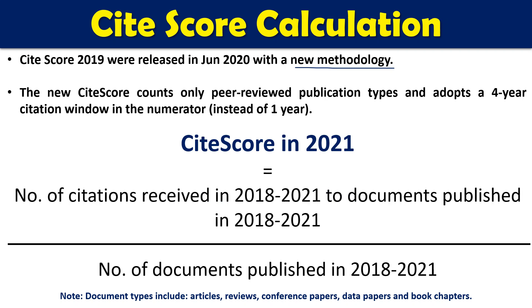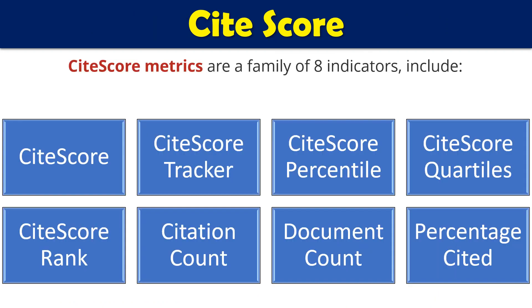The document types considered for CiteScore calculations are five different types: research articles, review articles, conference papers, data papers, and book chapters. CiteScore is also part of a family of indicators with eight different members: CiteScore itself, CiteScore Tracker, CiteScore Percentile, CiteScore Quartiles, CiteScore Ranks, Citation Counts, Document Count, and Percentage Cited.